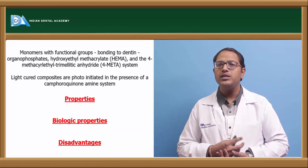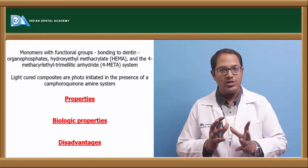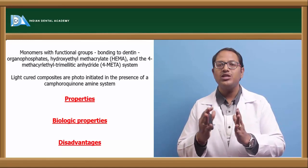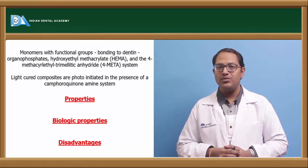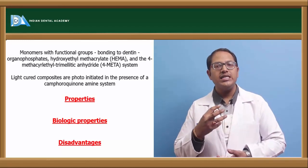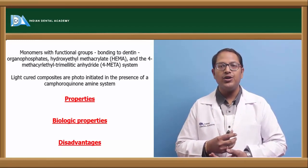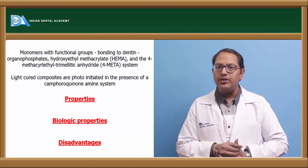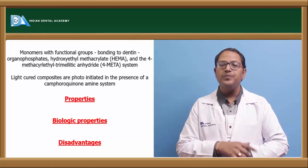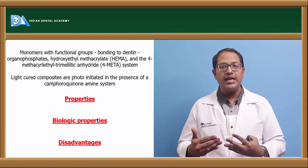Disadvantages of resin-based cements include polymerization shrinkage — since it is resin-based, it will shrink over time, leaving space between the restoration and the tooth. Increased viscosity is another disadvantage affecting film thickness. The material is very technique-sensitive. Regarding curing depth: light curing works up to a thickness of 1.5 mm, while dual cure works up to 2.5 mm — crown material choice should be based on these limits.